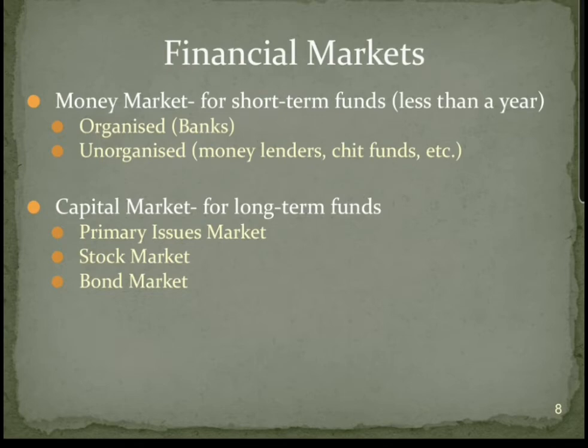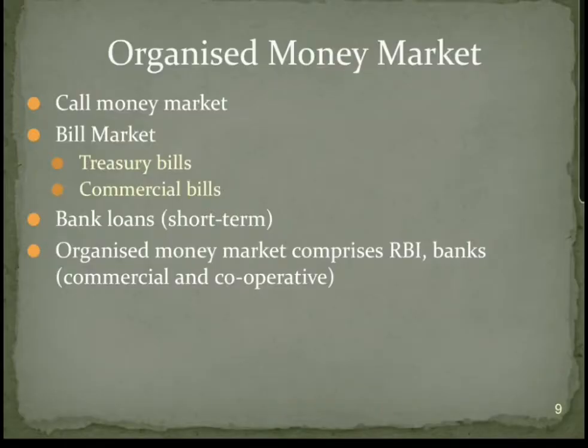Then there is the bond market. The organized money market is also known as the call money market. The bill market consists of treasury bills and commercial bills. Bank loans — we are specifically talking of short-term securities because we are talking of the money market, which lasts not more than a year.